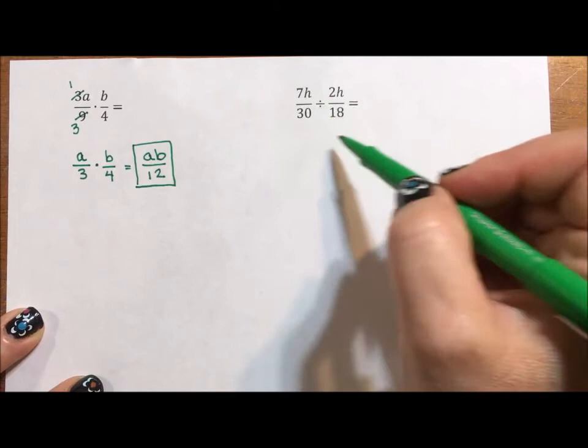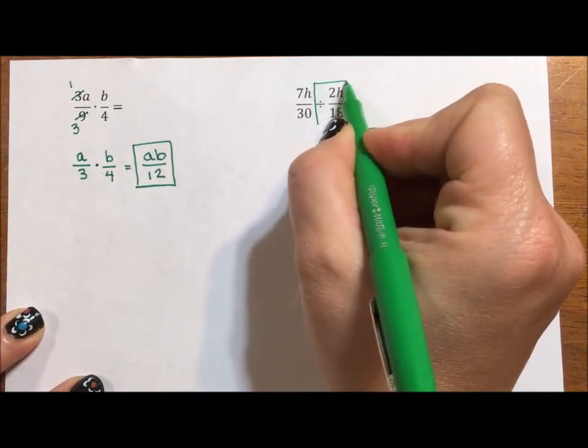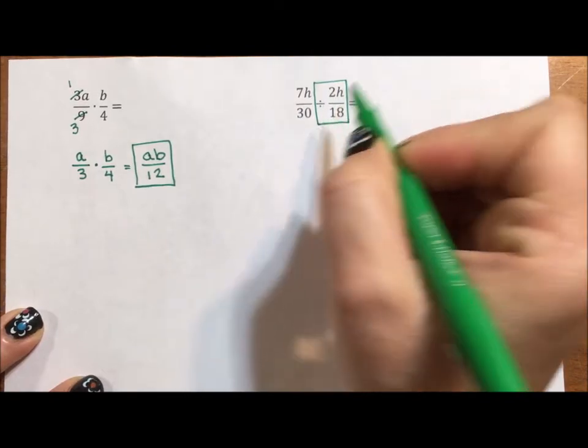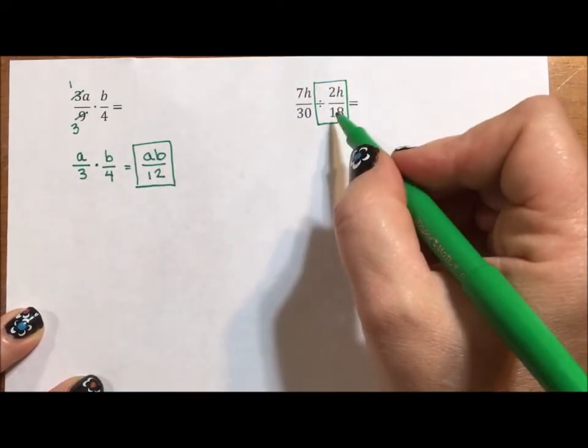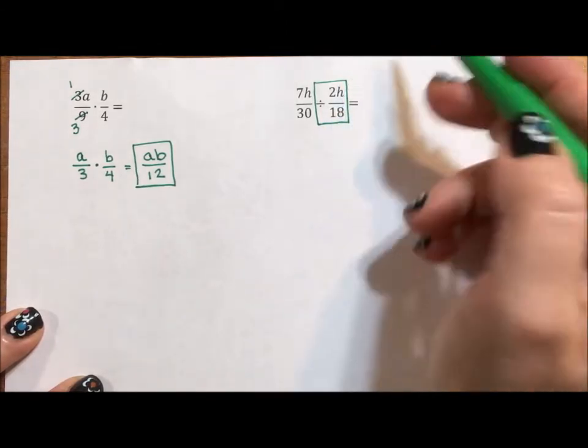Okay, in my next example, it's division. With my division problems, I very often put a square around the division sign and whatever fraction comes after it to remind myself that that fraction needs to be flipped. I need to find the reciprocal and then I can multiply.